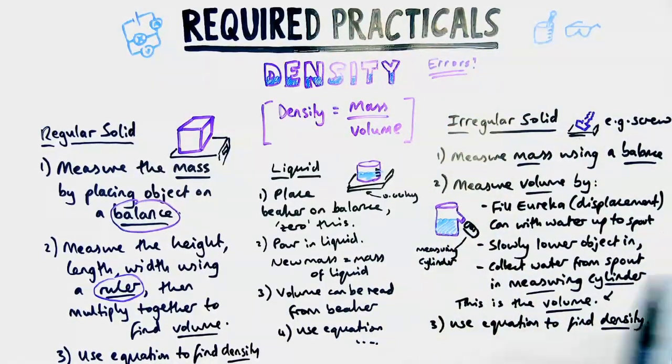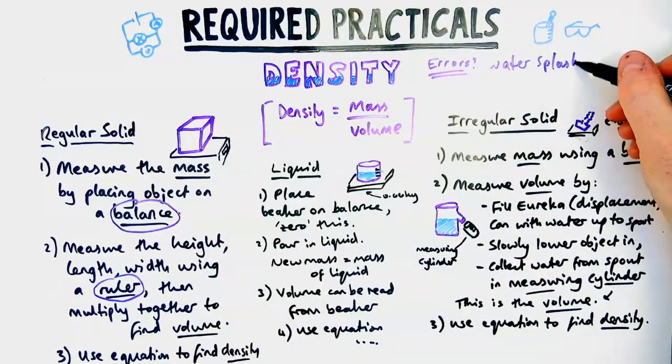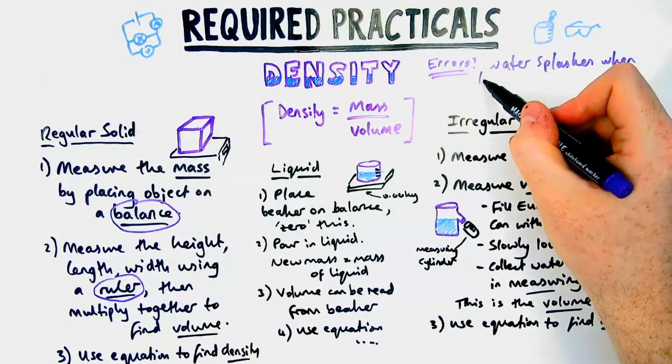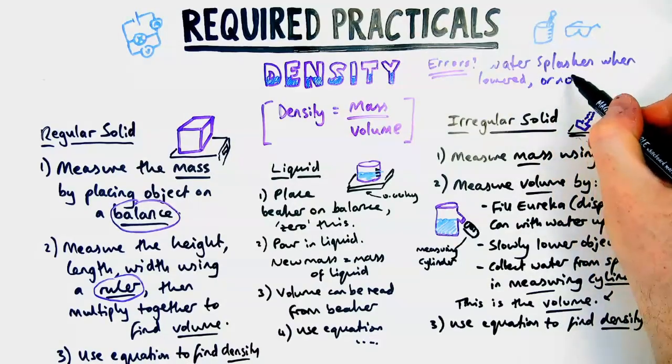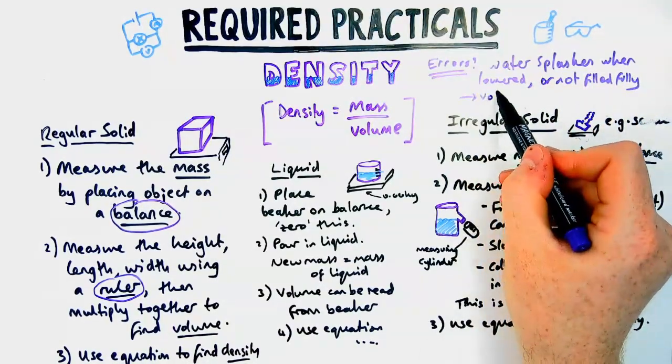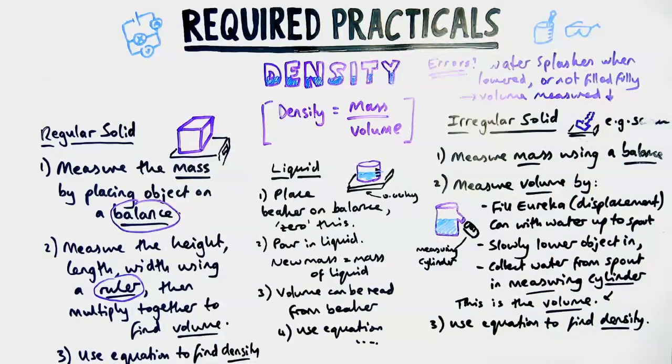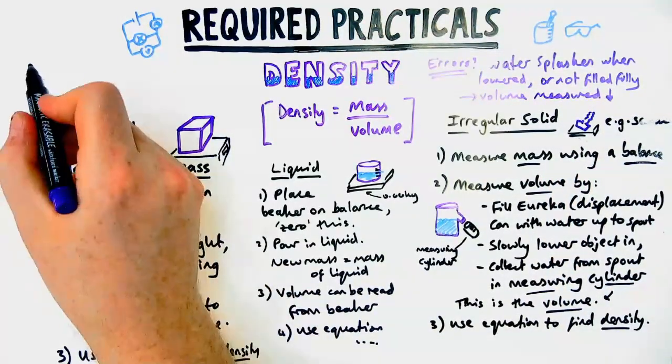Different errors you could encounter during this experiment - we'll do the irregular solid as it has by far the most errors. The issue might be that when you lower it in, water splashes when lowered, or if you don't fill the spout fully, that could lead to the volume you measure being lower. The water that comes out could be a lower volume, which means the density you record might actually be a bit higher.